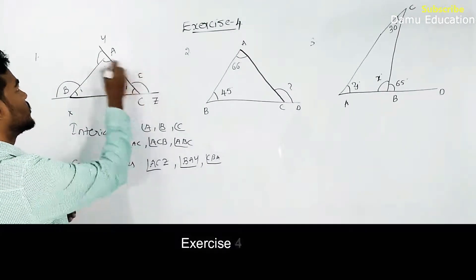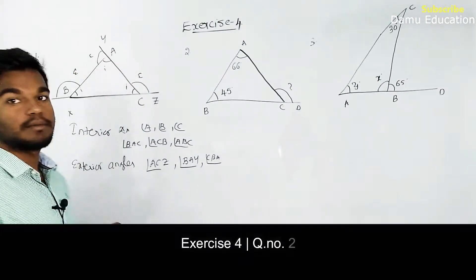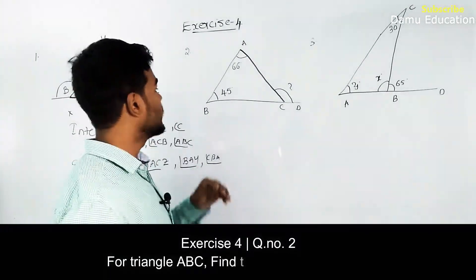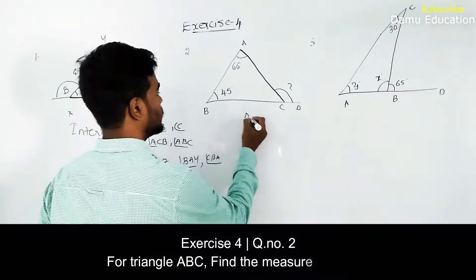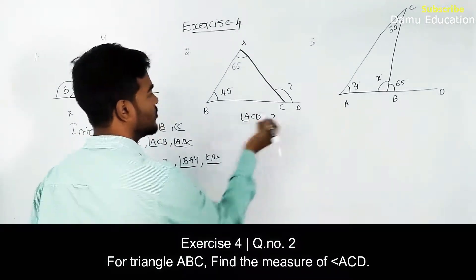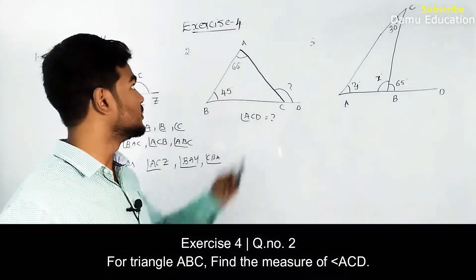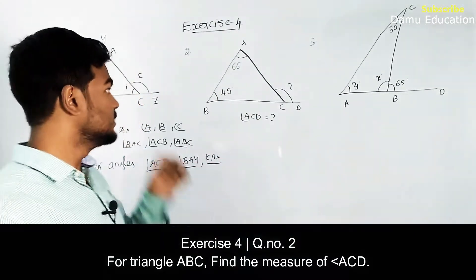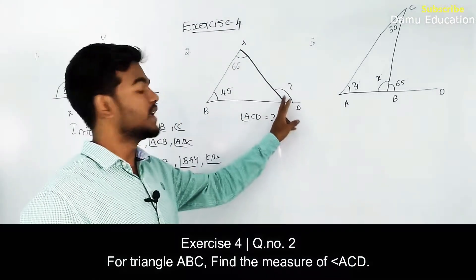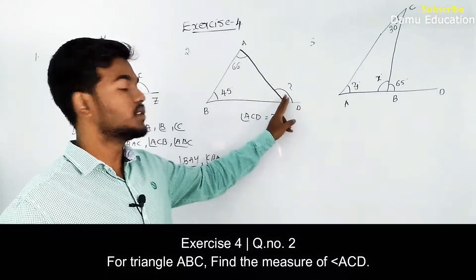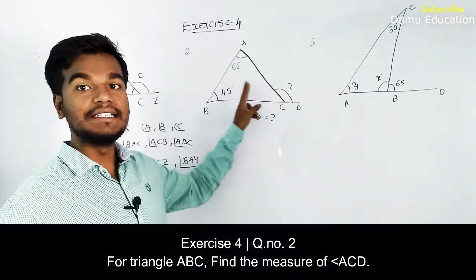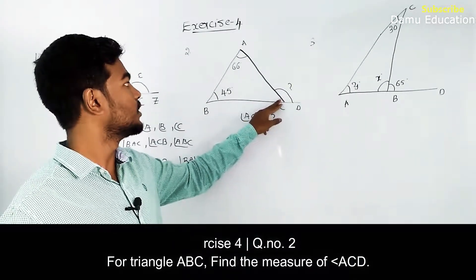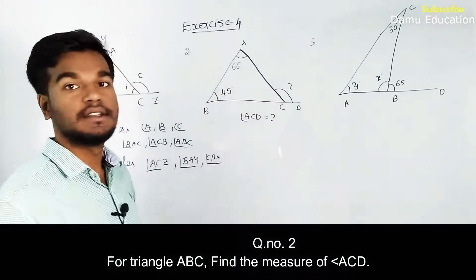The second question: we need to find angle ACD. Angle ACD is an exterior angle. The exterior angle property states that the sum of the exterior angle will be equal to the sum of the two opposite interior angles present opposite to that angle.